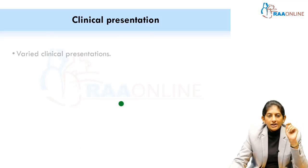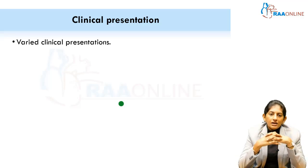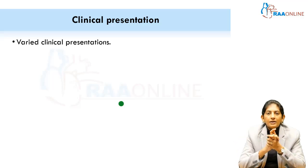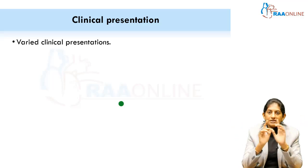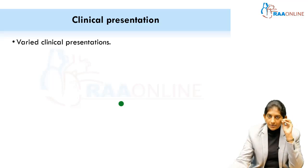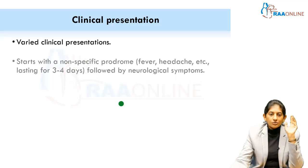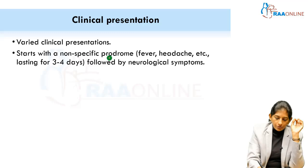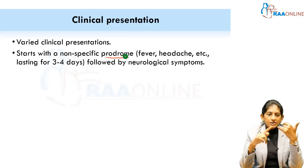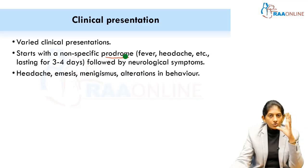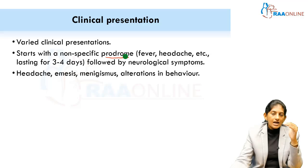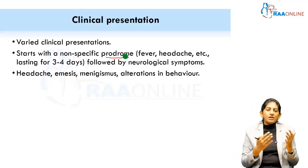The clinical presentation of ADEM cannot be pinpointed to one picture, but what you must understand is that if there is severe encephalopathy that cannot be explained by focal deficits, ADEM has to be your number one differential diagnosis after infections. It can range from a mild event to severe multifocal neurological deficits. Usually it starts with a non-specific prodrome — the child has fever and headache for about two to four days — followed by neurological symptoms one by one, reaching their peak in the first one week or even within the first three to five days.